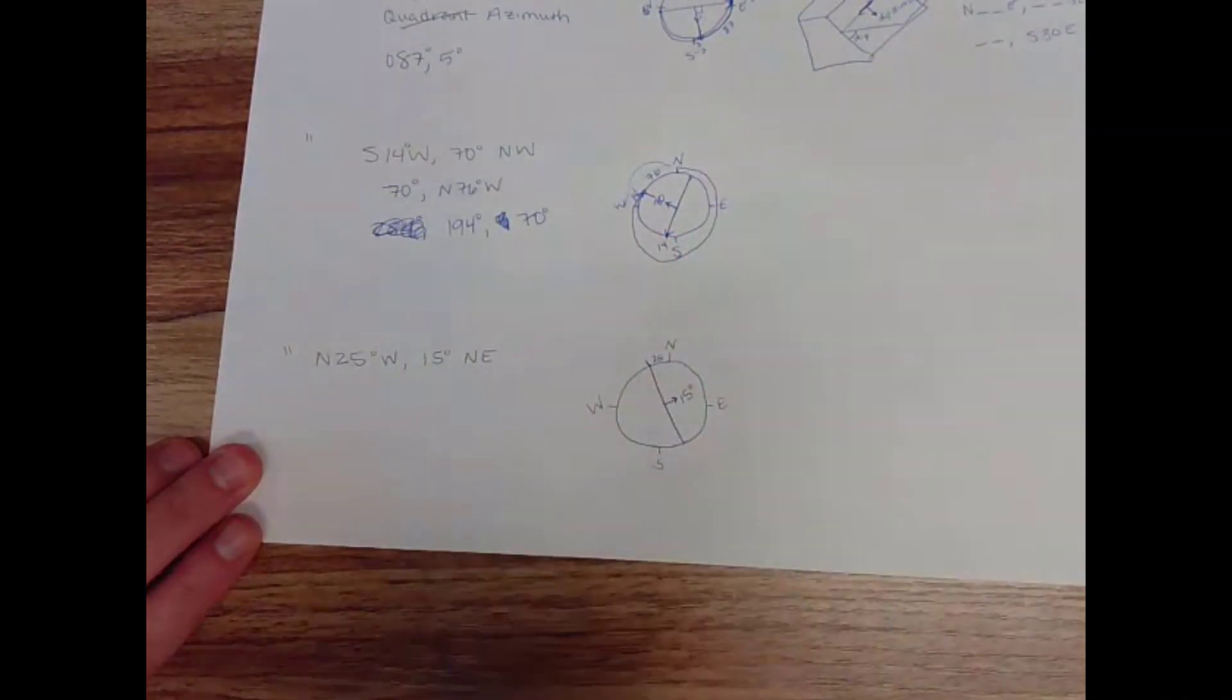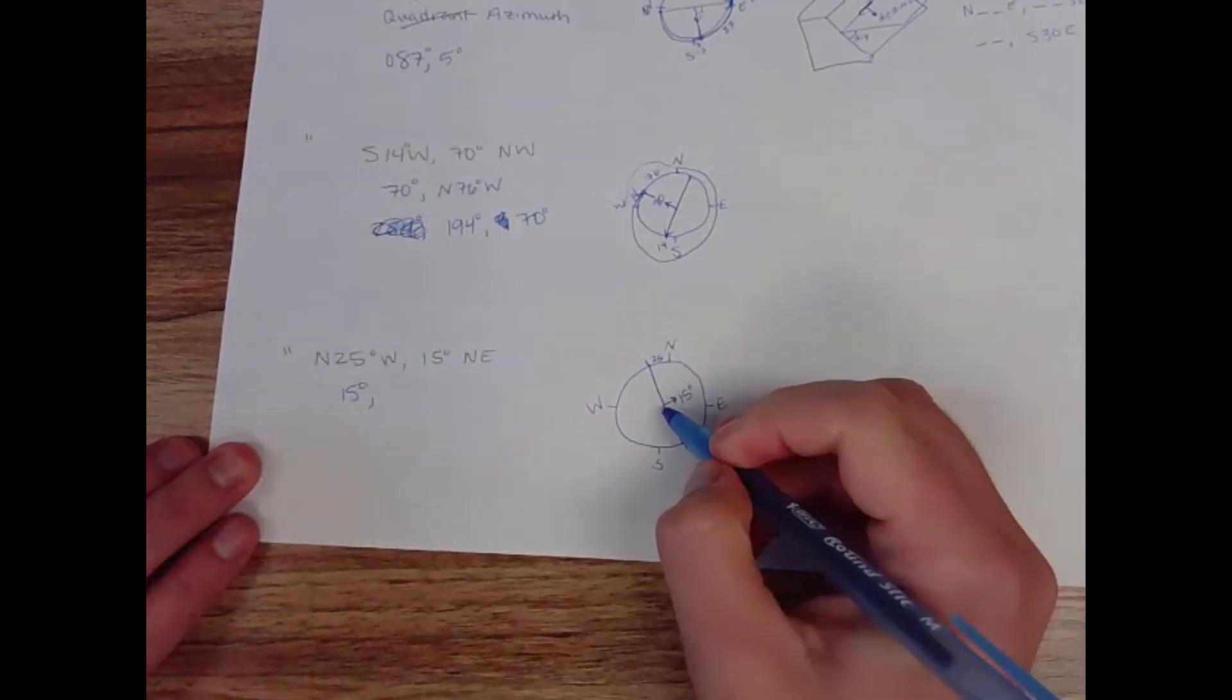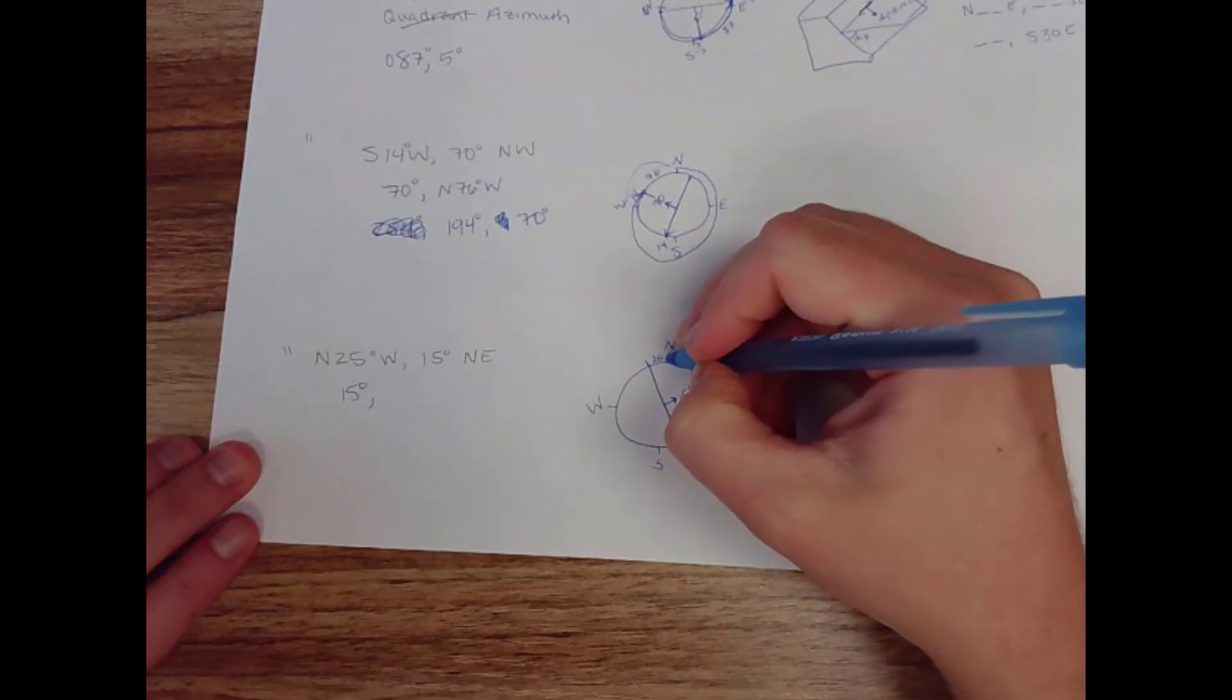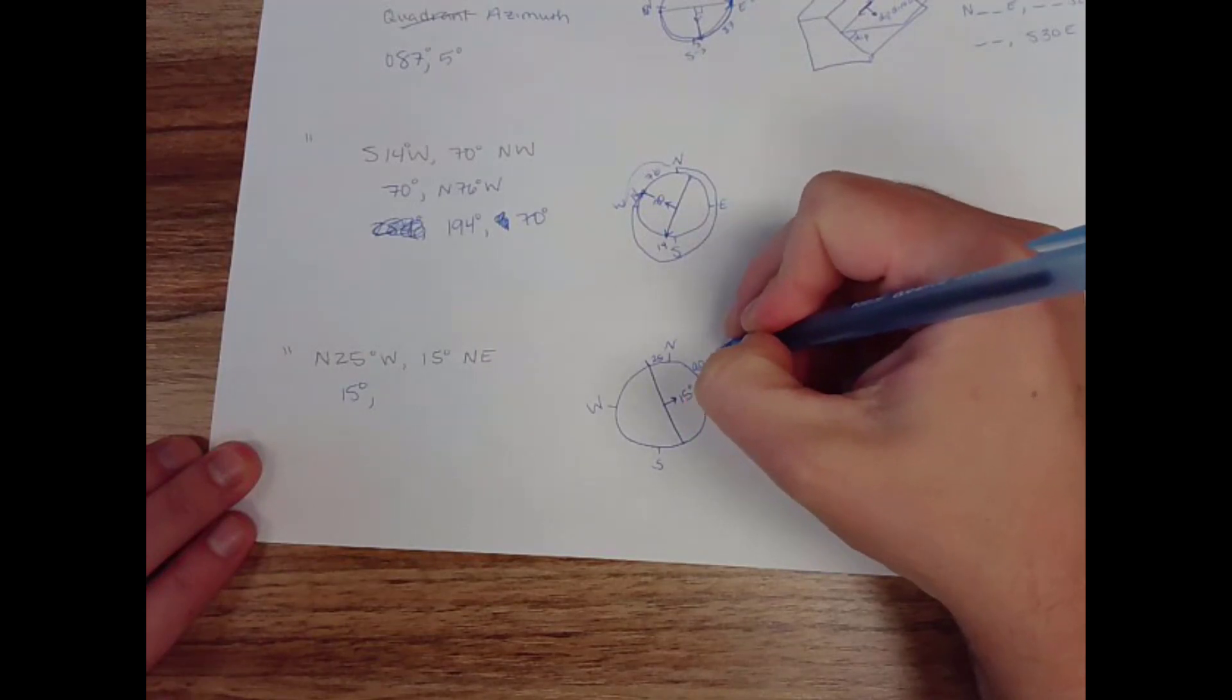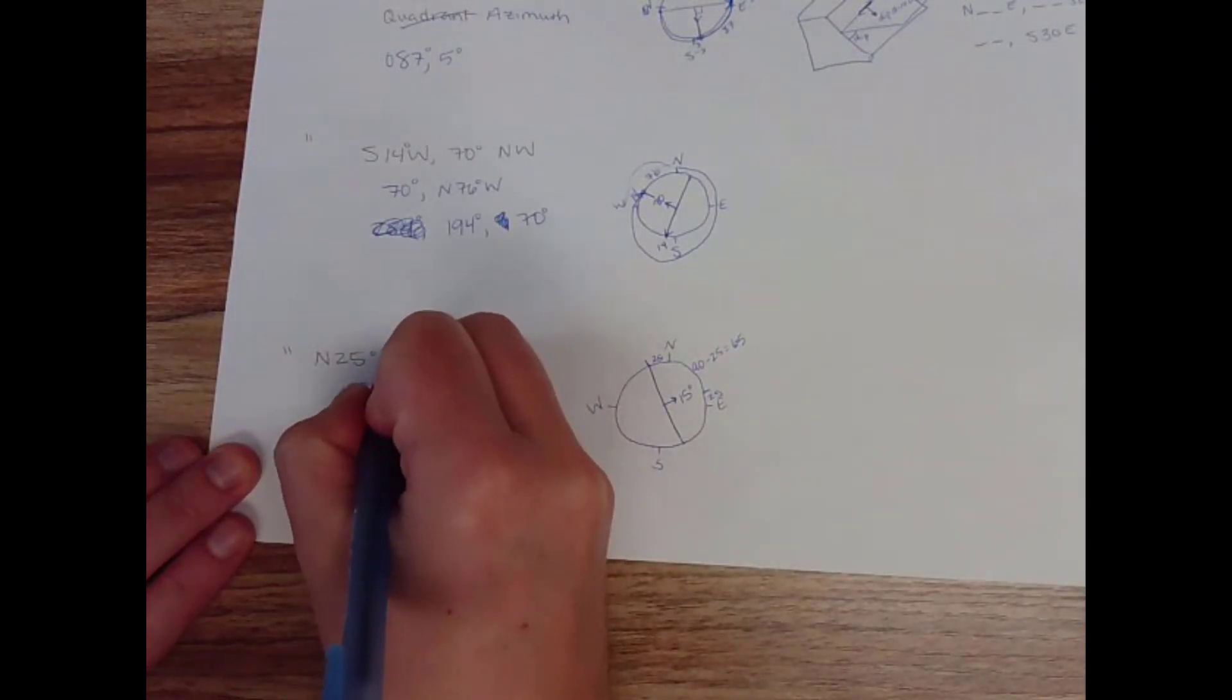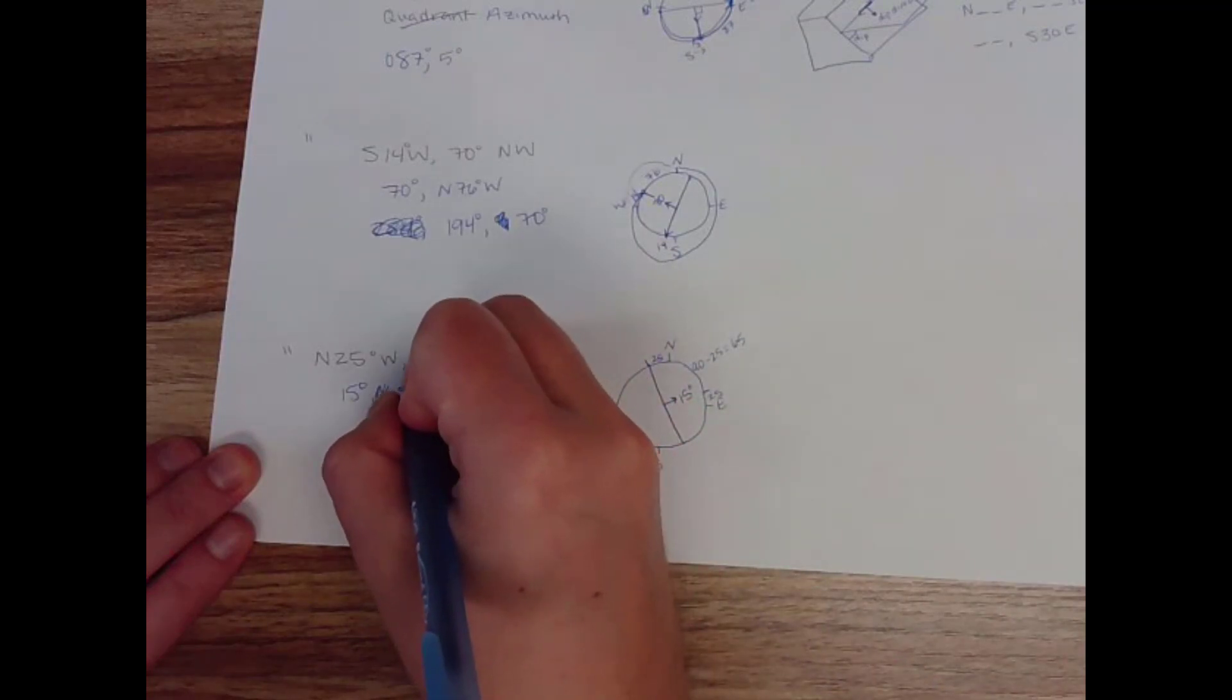Dipping 15 degrees to the northeast. So I've got dip, dip direction. My dip is 15 degrees. And the direction of my dip is 90 degrees from that. So this is 25. And this is going to be 90 minus 25, which is 65. North 65 east.